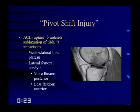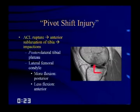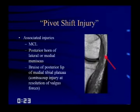The classic bone contusion pattern for ACL injuries involves the posterolateral tibia and lateral femoral condyle. The more flexed the knee at injury, the more posterior the contusion in the lateral femoral condyle. Associated injuries include the medial collateral ligament, the posterior horn of the lateral and medial meniscus, and sometimes bruising of the posterior lip of the medial tibial plateau — thought to be a contrecoup injury.